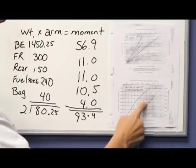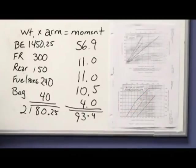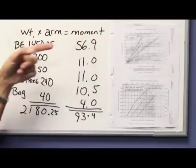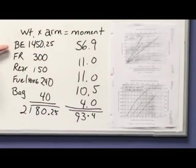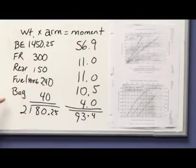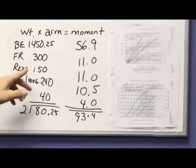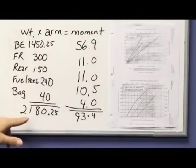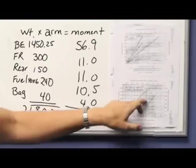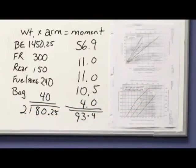So again, to calculate your weight and balance, it's the weight times the arm equals the moment. You need to consider the basic empty weight, the front seat passenger, the rear passenger, the fuel—remember it's in weight, not gallons—the baggage, and then you find your moment. You add all of those up, you go to your graph, make sure that the two meet somewhere in your envelope, and your airplane will be suitable to fly.